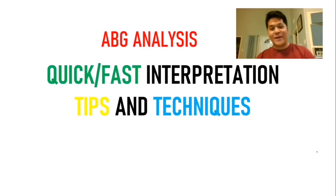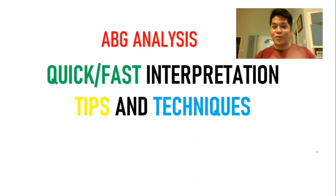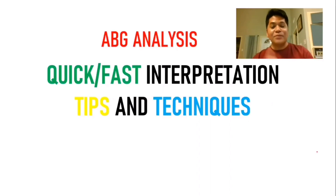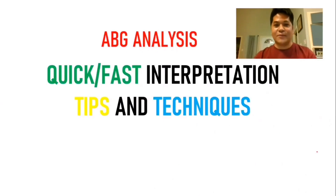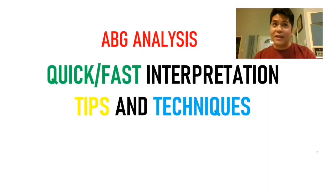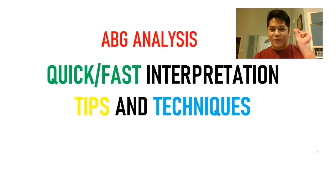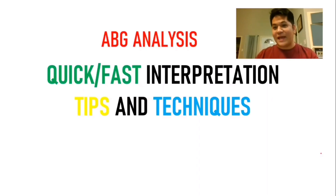For today's video, we're going to talk about the ABG analysis, or the arterial blood gas analysis — quick, fast interpretation, and other tips and techniques. In NCLEX, they always give a scenario and you will choose an answer based on metabolic and respiratory alkalosis or acidosis. They don't give complicated tests like compensated or uncompensated. This will help you quickly and easily analyze arterial blood gases.